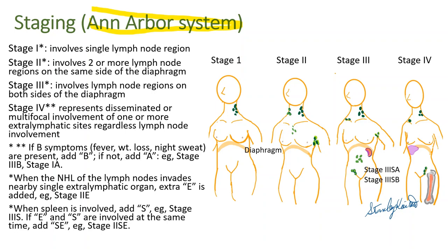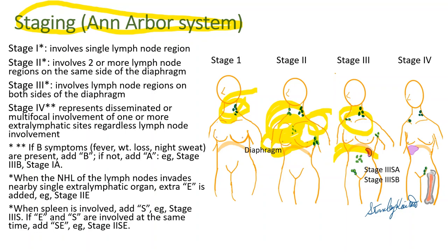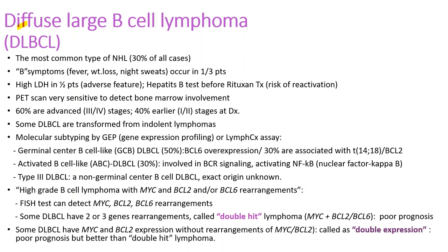The Ann Arbor system is used for staging. Stage 1: lymphoma involves a single lymph node region. Stage 2: involves two or more lymph nodes on the same side of the diaphragm. Stage 3: lymphoma involvement crosses the diaphragm. Stage 4: involvement of a distant organ like the liver or bone marrow. When the spleen is involved, we add S. When the patient has B symptoms, we use B; if not, then A.